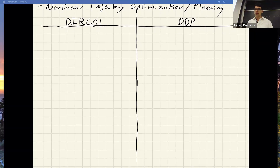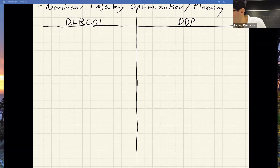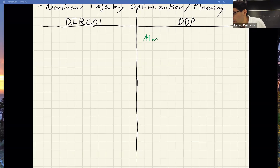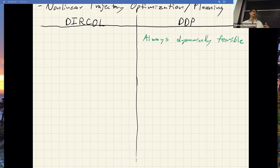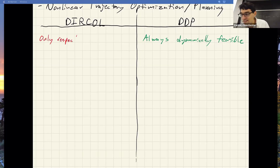One thing we can say right out of the gate: DDP-type algorithms are always doing rollouts — that's what the forward pass does. So the trajectories always satisfy the dynamics, which is nice. You can stop early or let the algorithm fully converge and it still obeys dynamics constraints — still obeys physics. We say this is always dynamically feasible; sometimes people call that an anytime algorithm. Whereas in DIRCOL, dynamics are written as equality constraints and don't have to be satisfied with your initial guess, which is very useful — you can warm-start with a heuristic and converge faster. The downside is it only obeys dynamics constraints at convergence.